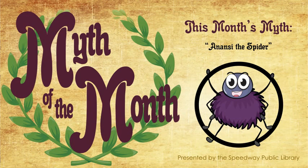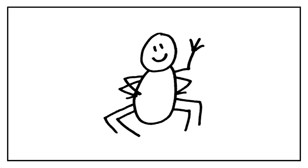This month, we'll be looking at stories about Anansi the Spider. Anansi is a well-known character from African folklore originating in Ghana. Anansi is a clever trickster, using his wit to outsmart bigger and stronger creatures. Here are just a few of Anansi's tales.